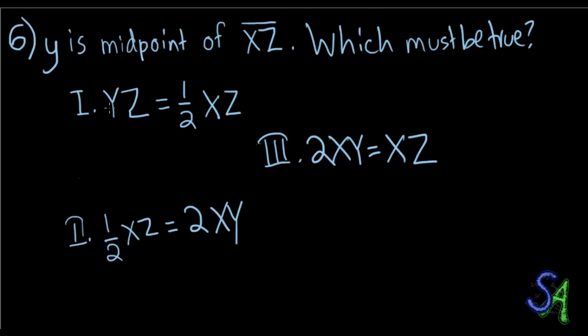If Y is the midpoint of line XZ, which of the following must be true? Then they gave us three options. Either YZ is equal to half XZ, or half XZ is equal to 2XY, or 2XY is equal to XZ.